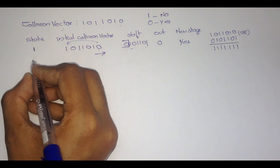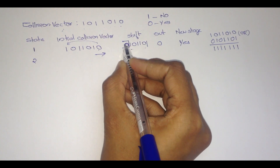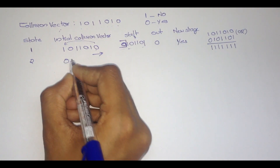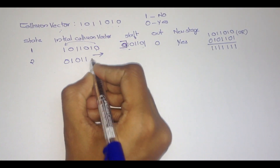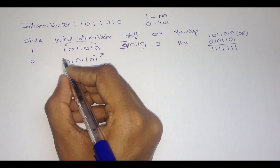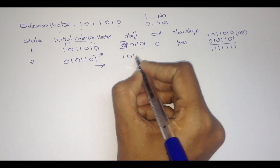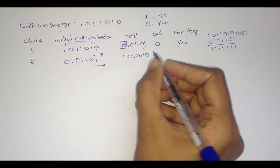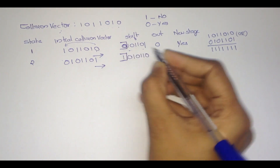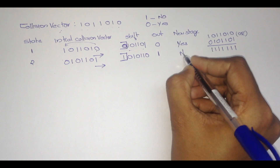Now at the second stage, the shifted value is returned: 0, 1, 0, 1, 1, 0, 1. Again we have to perform right shift; this value will become at first: 1, 0, 1, 0, 1, 1, 0. We have to out this first value, which is 1. Therefore, no new state occurs.